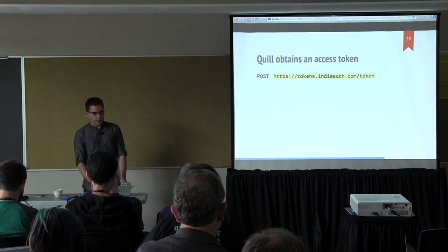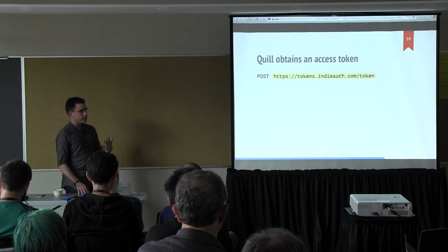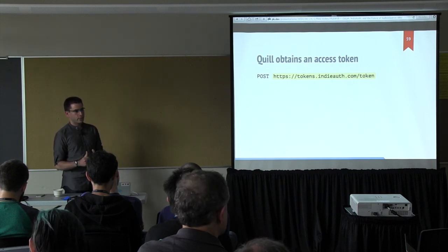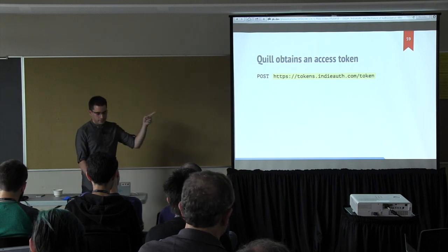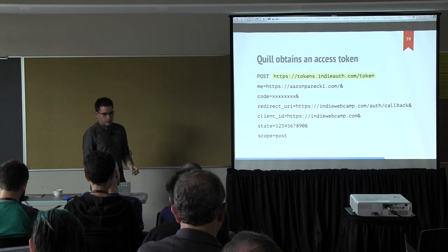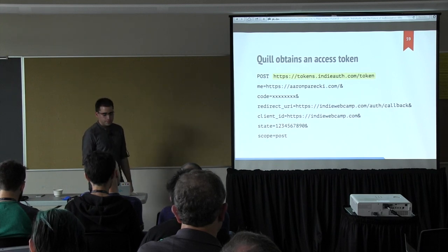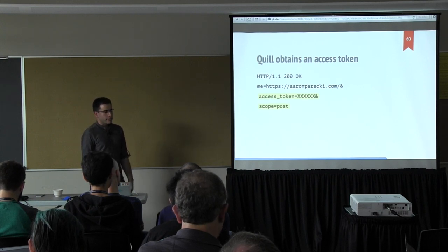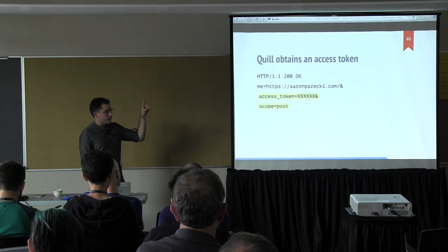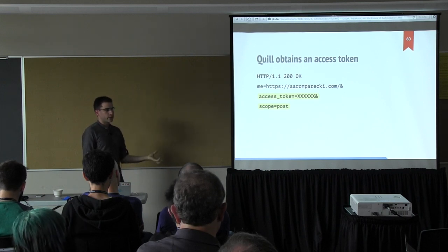At this point Quill has the authorization code. Rather than just using it to check who I am, it now needs to actually get an access token for my site. So it says: hey aaronparecki.com, where can I get access tokens? And I say, oh you can go here. So it's going to POST the authorization code and all the information about the request to my token endpoint. That code — the one with all the X's — is the code just issued in the previous step. If my token endpoint agrees, it will go ahead and issue an access token. The response has an access token and scope. Quill stores that access token and uses it against my website to create posts.